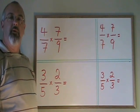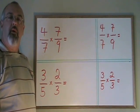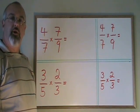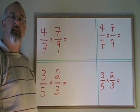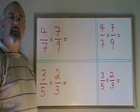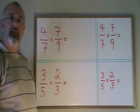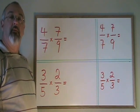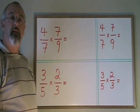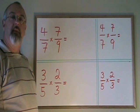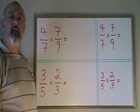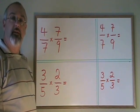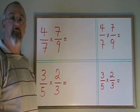Canceling is something we do when we are multiplying fractions, which helps us to multiply using smaller numbers and can make the problem easier. It can also make it so that we don't have to reduce the fraction at the end to give our most simplified answer.